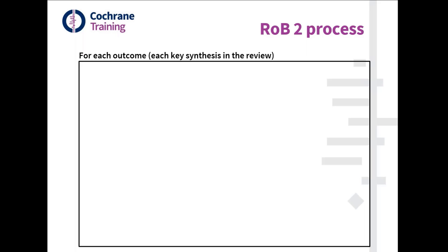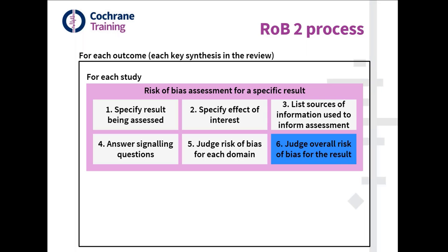Here is the quick summary of the RoB2 process. We first need to determine which results to assess. For each of the key syntheses in the review, we first identify which studies potentially contribute to it, and then identify the result from each study that we would like to use in the synthesis to specify the effect of interest. This was covered in detail in webinar three.